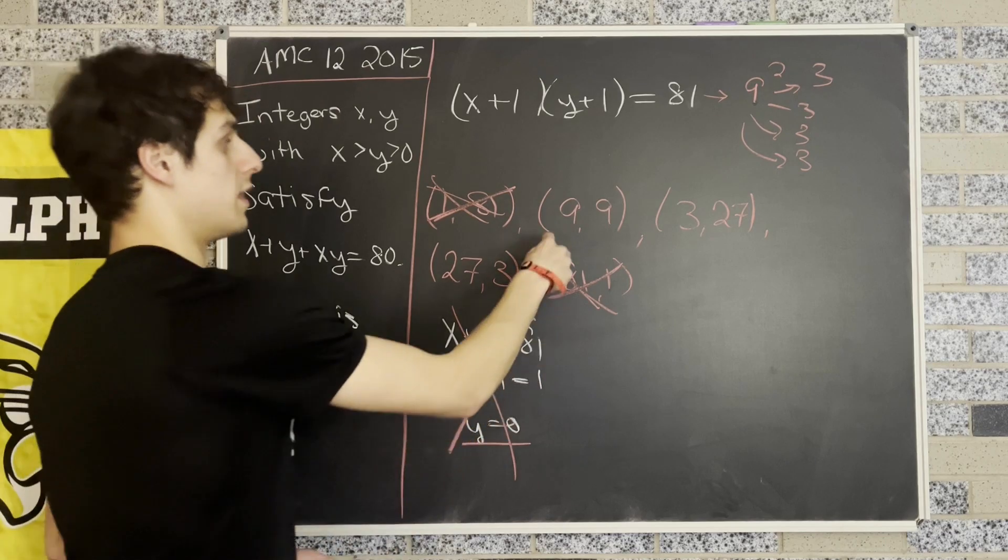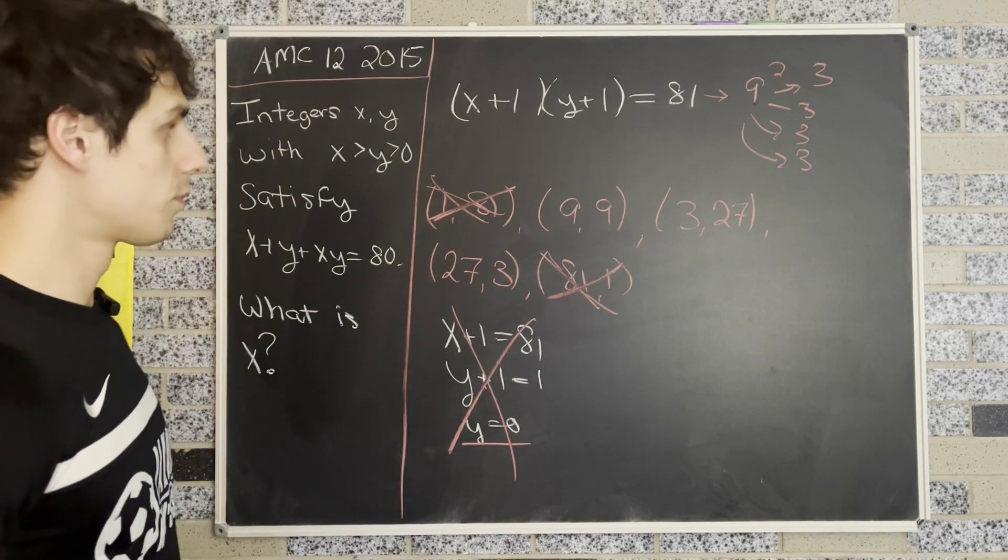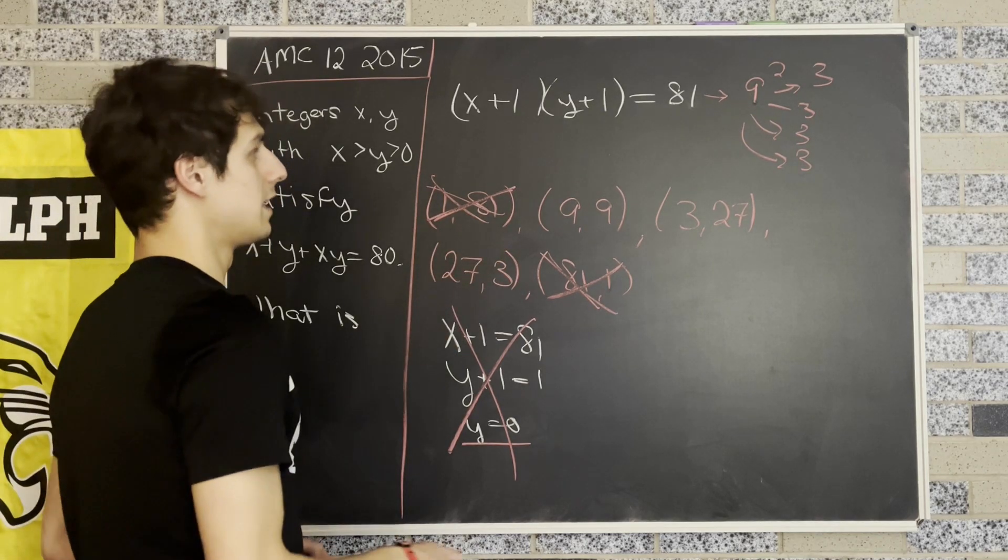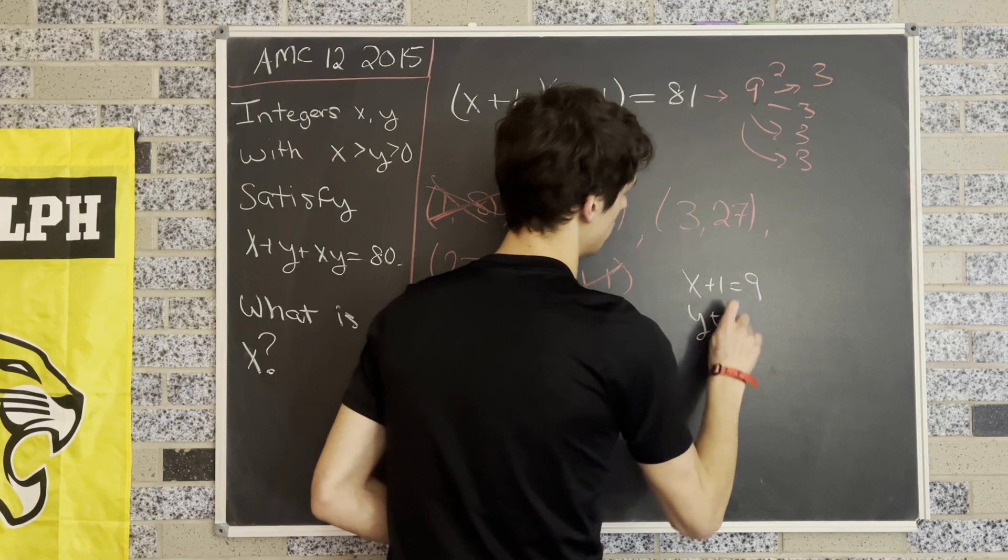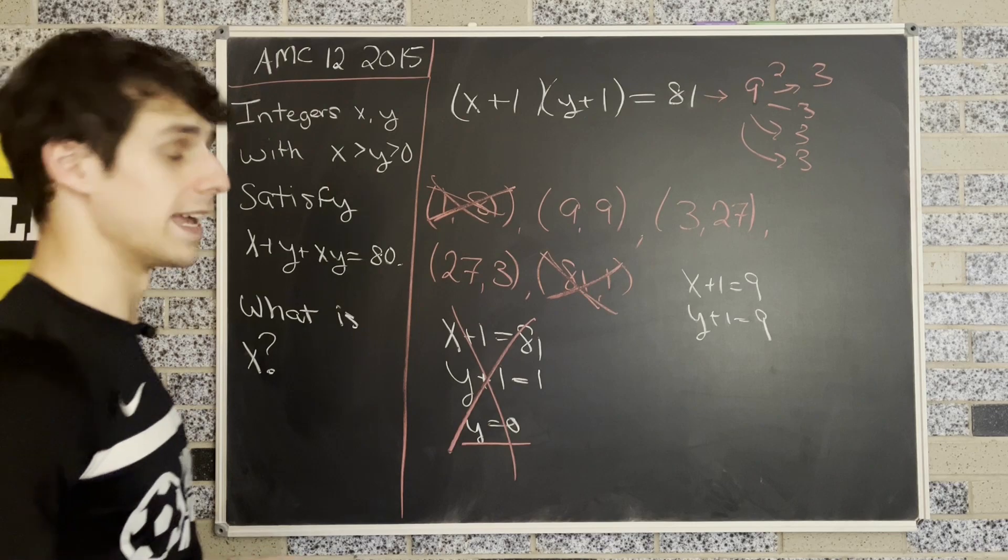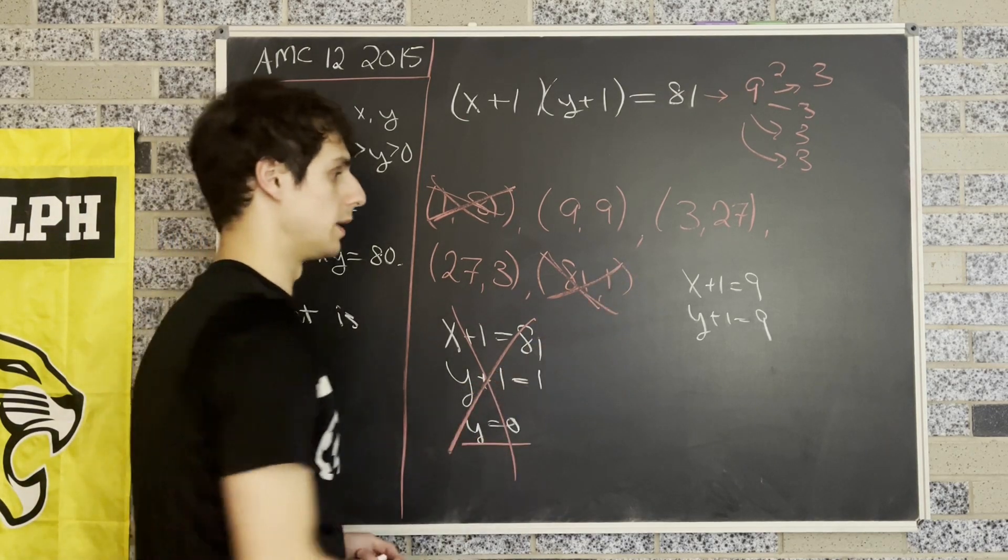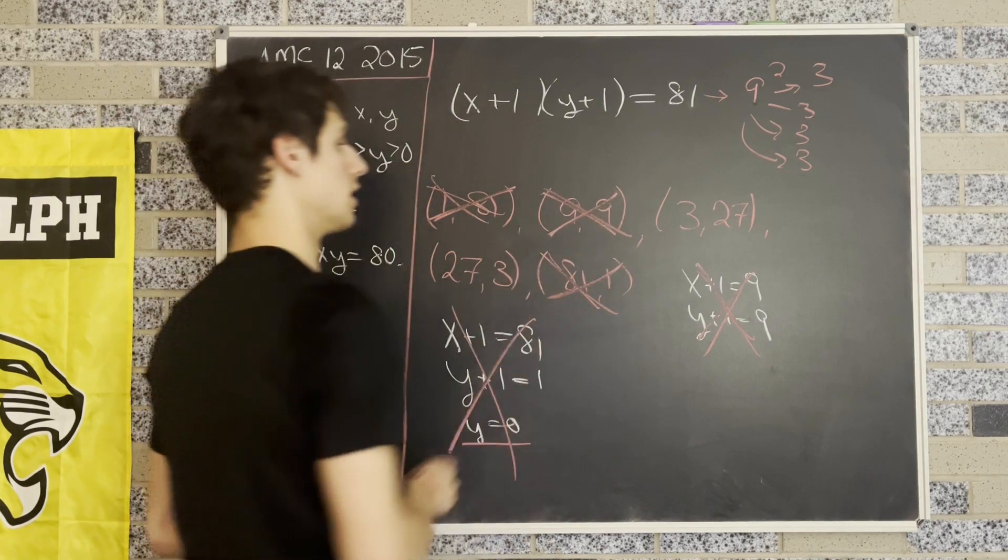Okay, so now we're only left with 9, 9, 3, 27, and 27, 3. And notice that if we do 9 and 9, we have x plus 1 is equal to 9, and y plus 1 is equal to 9. But we also have that x is strictly bigger than y. And in this case, both x and y would be equal to 8. So it's not this case either, and we can cross that off our list.